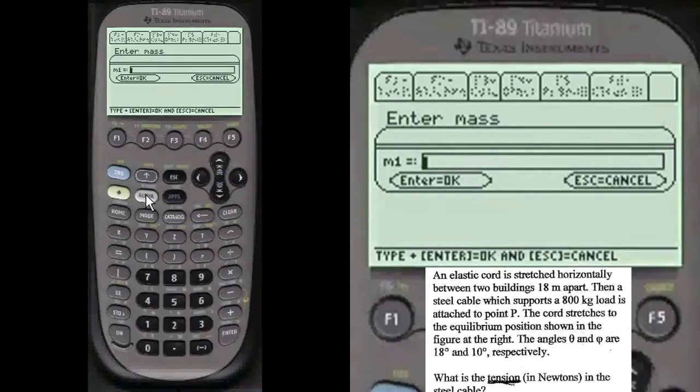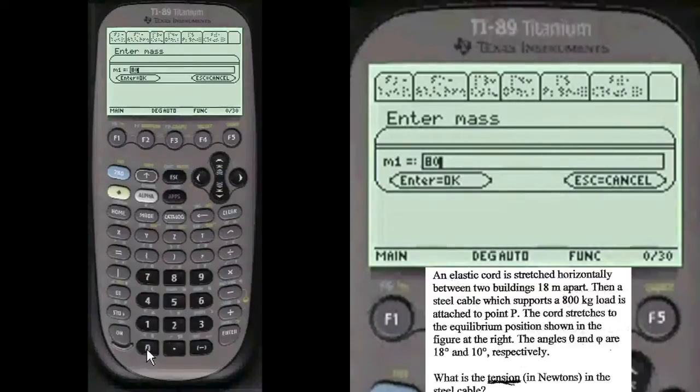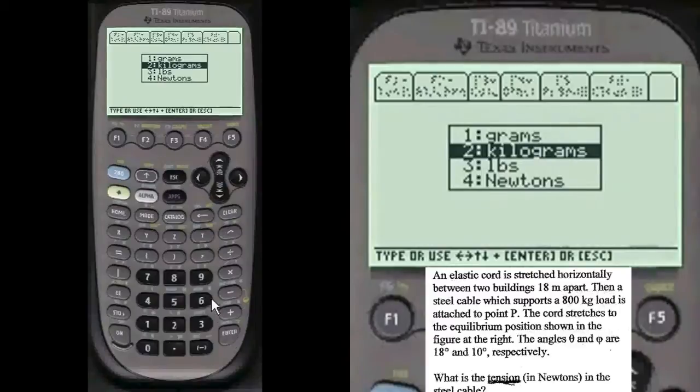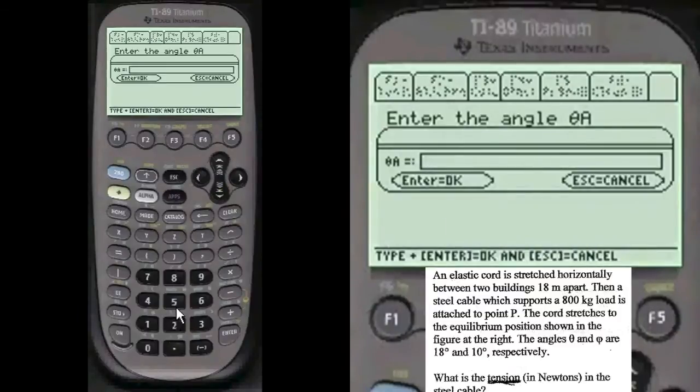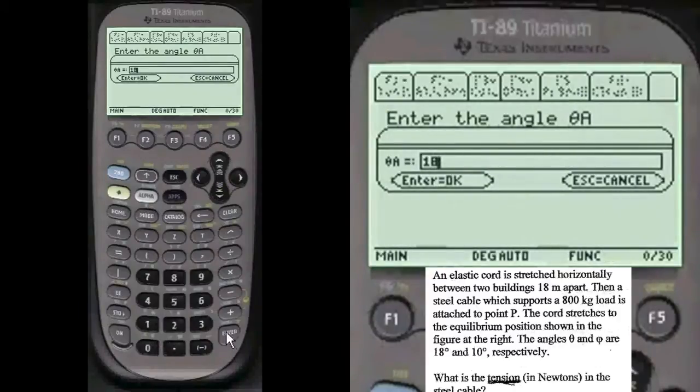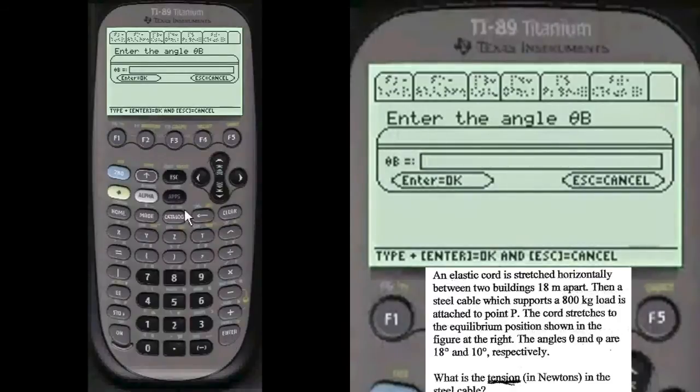And we have to press alpha before we enter anything. We go alpha 800 is the mass in kilograms. I give you these in case whatever they give you, you have that choice. And the first angle is alpha 18. And the other angle is alpha 10.